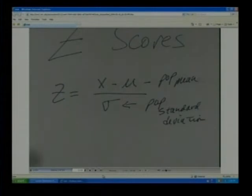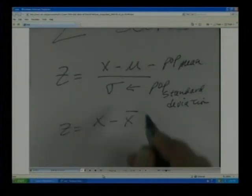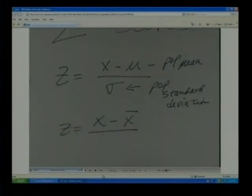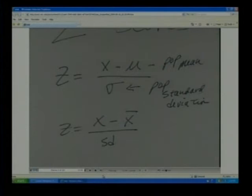What we do a lot of times is we use the sample mean for our estimate of the population mean, and we use the sample standard deviation. Sometimes we just use S for our estimate of the population standard deviation. Now, look at this. What does this do?